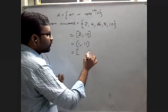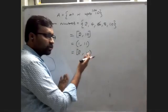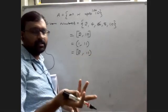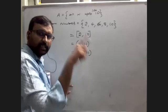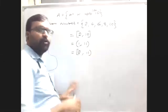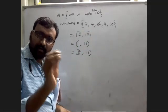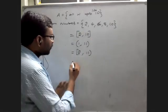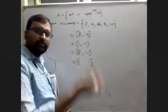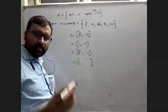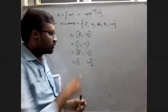With a mixed bracket like [2, 11), you include 2 (closed) but exclude 11 (open). So count from 2: 2, 4, 6, 8, 10 — and 11 is not countable because of the open bracket. For (1, 10], exclude 1 but include 10. Count: 2, 4, 6, 8, 10. Closed means include, open means exclude.